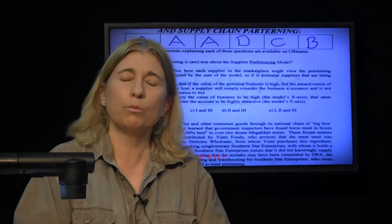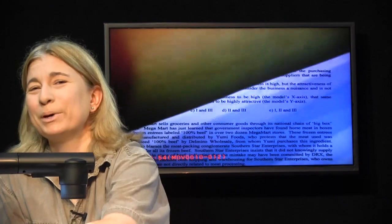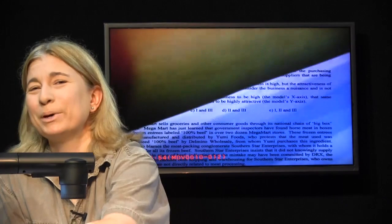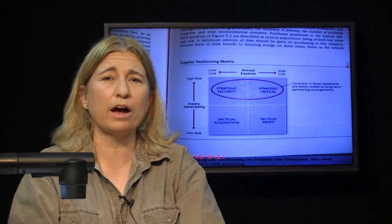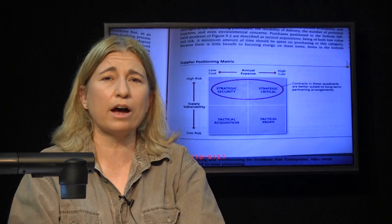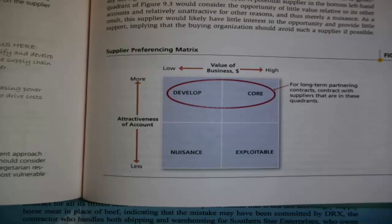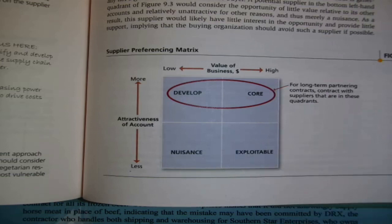For instance, this first question asks about the supplier preferencing model. What are these two very similar looking and similar sounding models? There is the supplier positioning model — a four-box matrix for classification meant to classify your own supplies. As opposed to the supplier preferencing model, which is a very similar looking four-box model meant for classifying potential suppliers, people you might do business with.